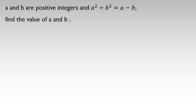a and b are positive integers and a over b squared equals a minus b. Find the value of a and b. To solve this problem, let's rewrite the main equation: a squared divided by b squared equals a minus b. Writing it as a fraction, a squared over b squared equals a minus b.